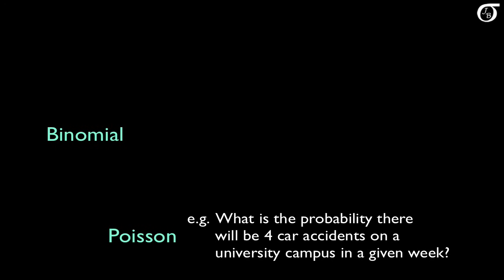Another distribution related to the binomial is the Poisson distribution, but this one's a little harder to explain. The Poisson distribution is the distribution of the number of events in a given time, or length, or area, or volume, etc., if those events are occurring randomly and independently. There's a bit more to it than that, and I go into this in much greater detail in my Poisson videos, but that's the gist of it. So we might use the Poisson distribution to answer a question like: what is the probability there will be exactly 4 car accidents on a certain university campus in a given week?